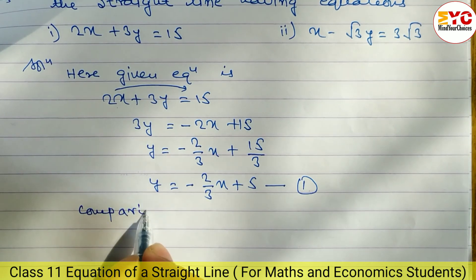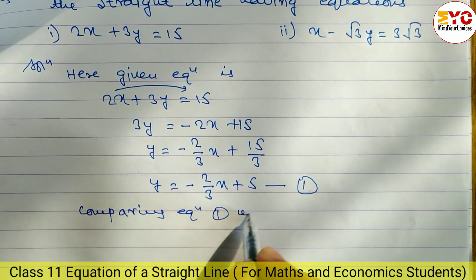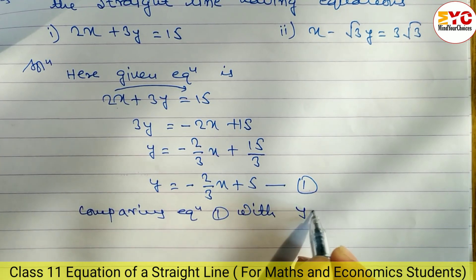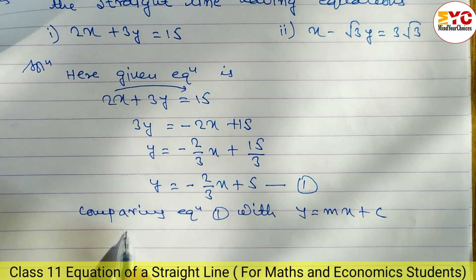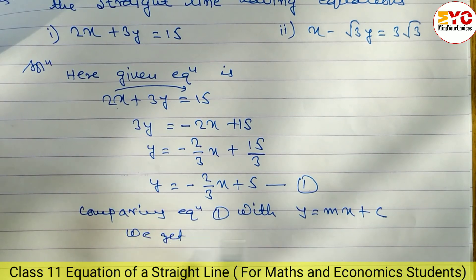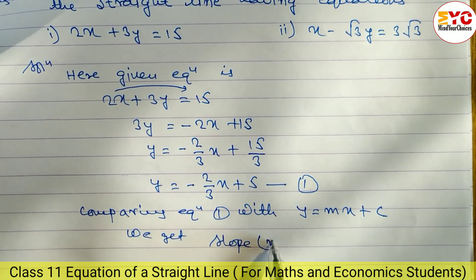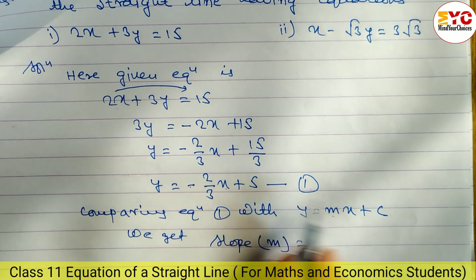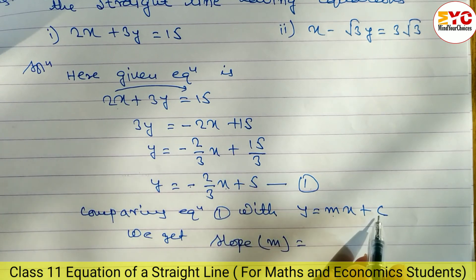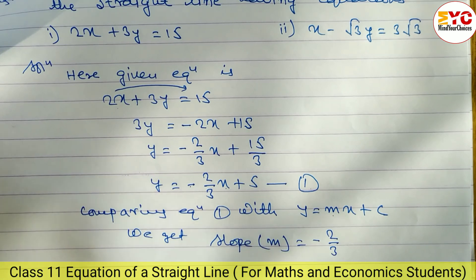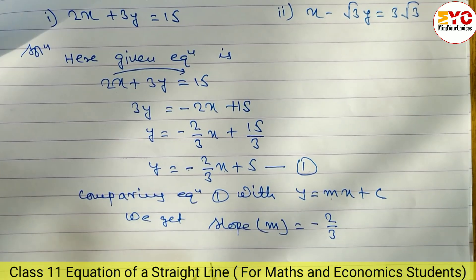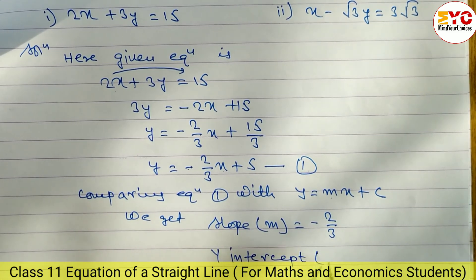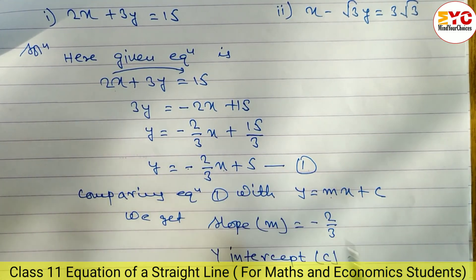Comparing equation 1 with y = mx + c, we get slope m = -2/3. Similarly for y-intercept, in the place of c what is here: c = 5. So y-intercept is equal to 5.